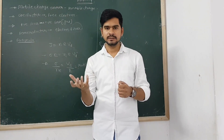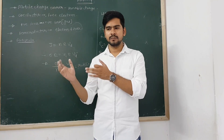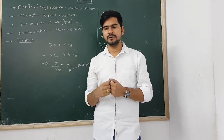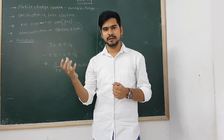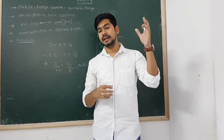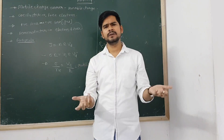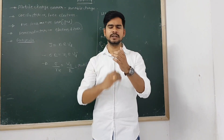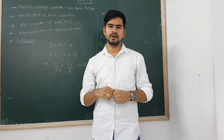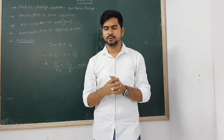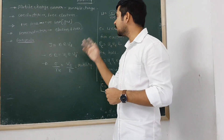So, mobility means mobile charge carrier — moveable charge. A charge moves because of the battery, which provides an electric field. Because of different electric fields, the velocity of the free electrons will be different. So the ratio of drift velocity to the electric field is called mobility. Thank you so much for watching this video. I hope you understood.